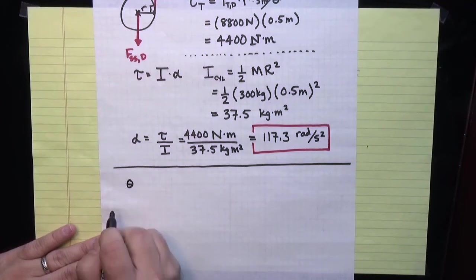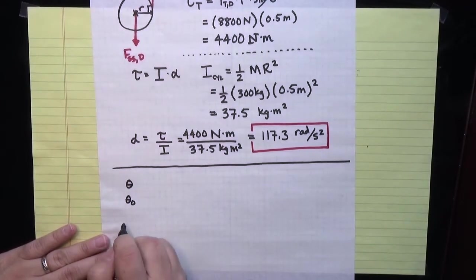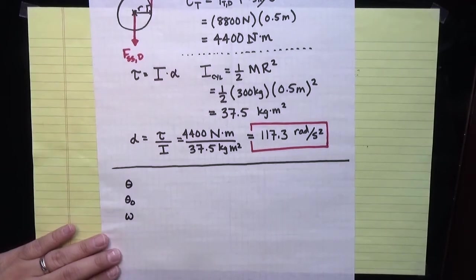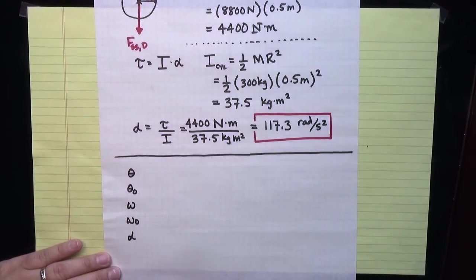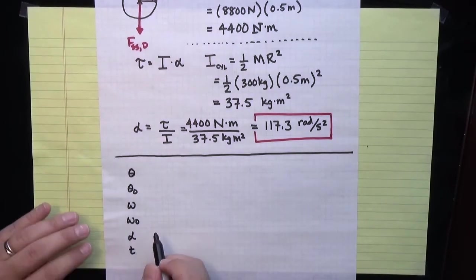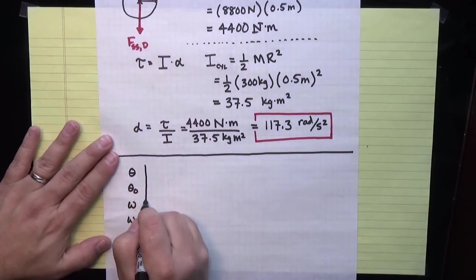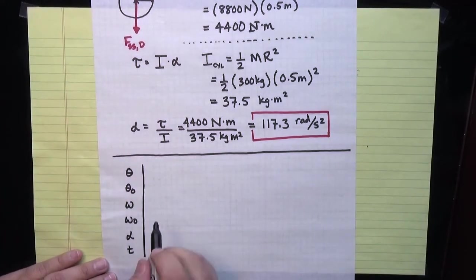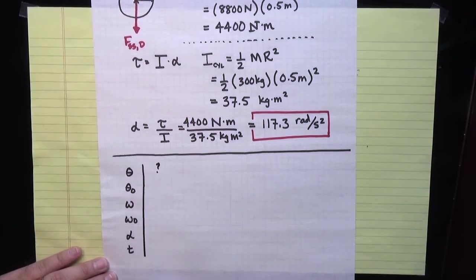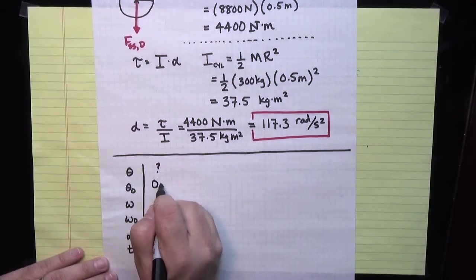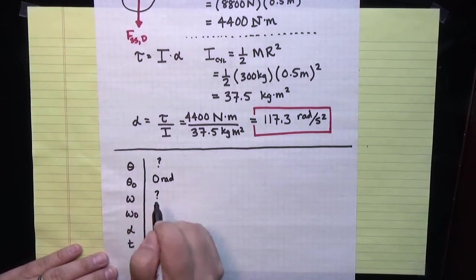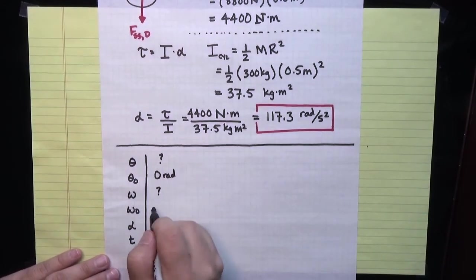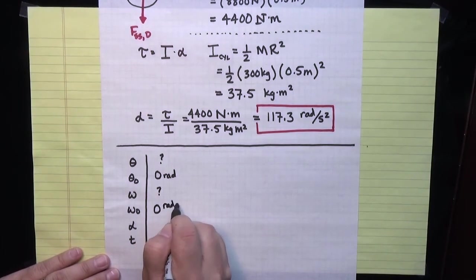This is final theta, this is initial theta, this is final angular speed, this is initial angular speed, this is angular acceleration, and this is the time in the kinematics problem. We don't know what the final angle is, that's basically what we're being asked to find. We're going to assume the starting point is at zero radians.